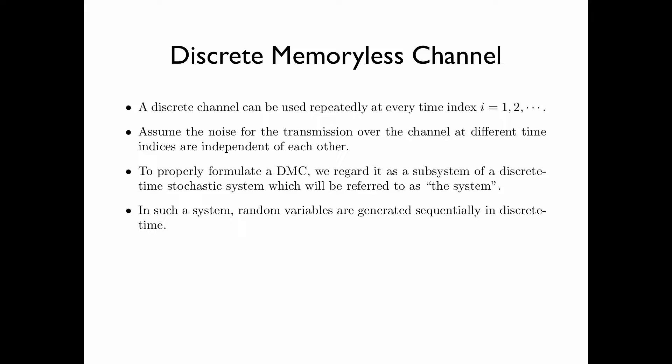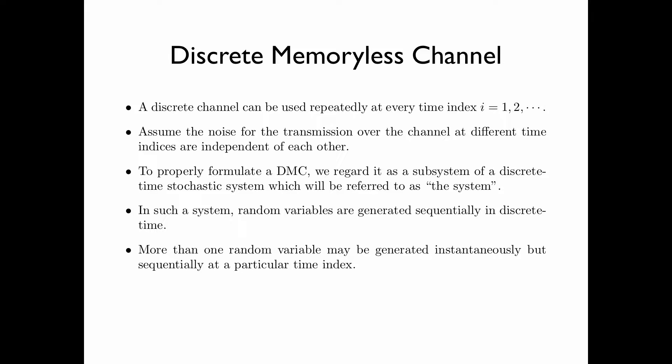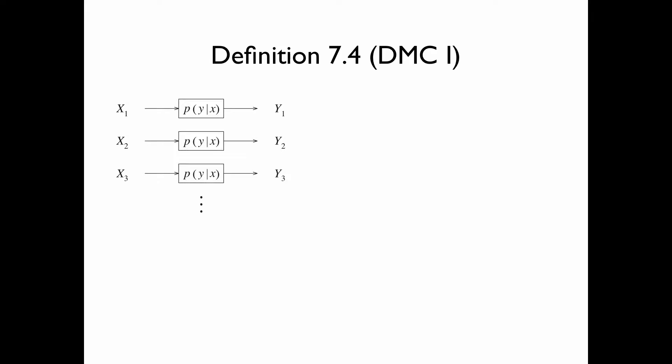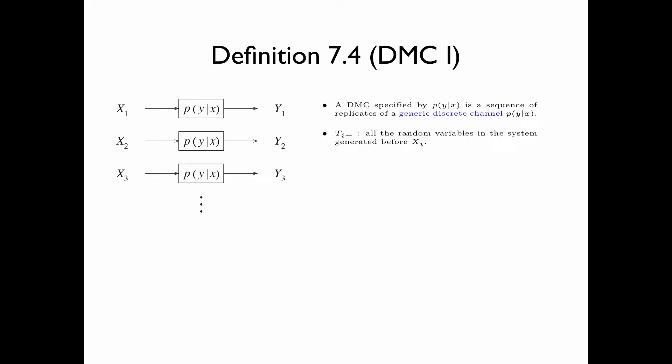In such a system, random variables are generated sequentially in discrete time. More than one random variable may be generated instantaneously but sequentially at a particular time index. Assume the noise for the transmission over the channel at different time indices are independent of each other. We now introduce our first definition of a DMC, called DMC1.